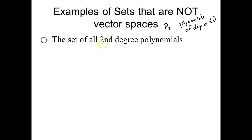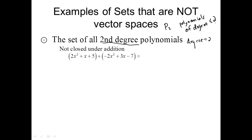This is the set of all second-degree polynomials, meaning degree equal to two. Something changes when you do that. As long as you have one axiom that fails, you don't have a vector space. And the very first one fails: if you take two degree-two polynomials and add them together, it's possible you could not end up with a degree-two polynomial. If your coefficients are opposites, when you add them together, you'll lose that second-degree term.